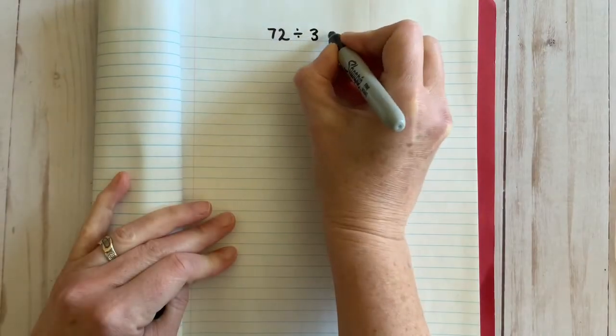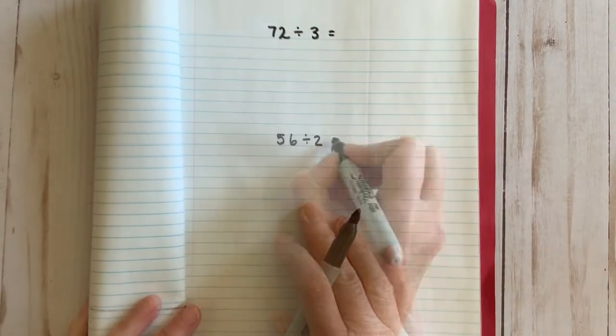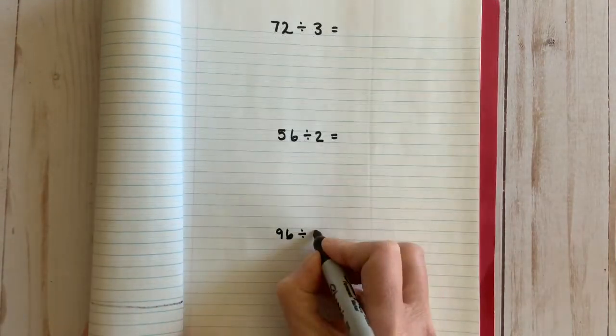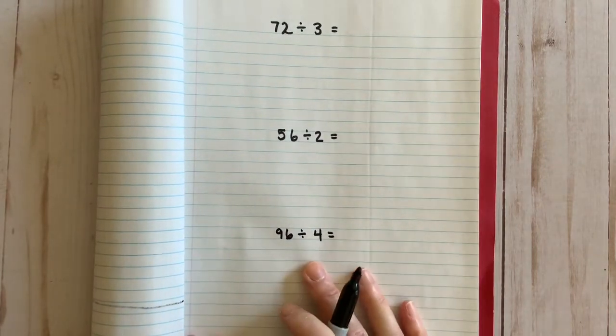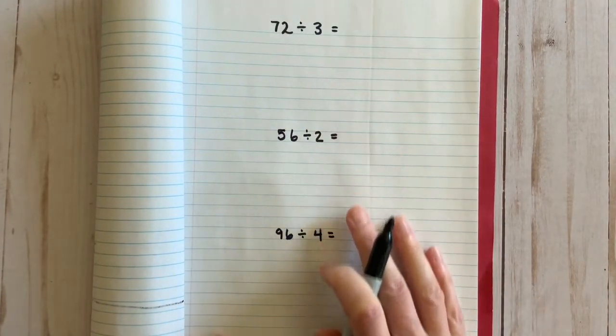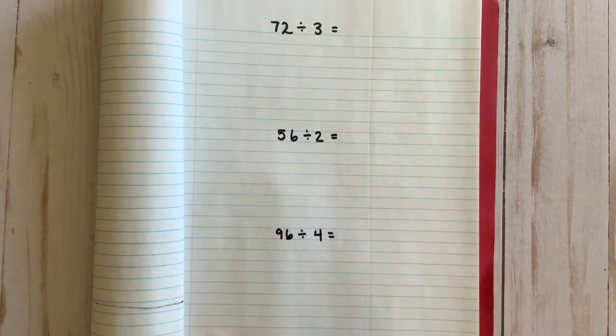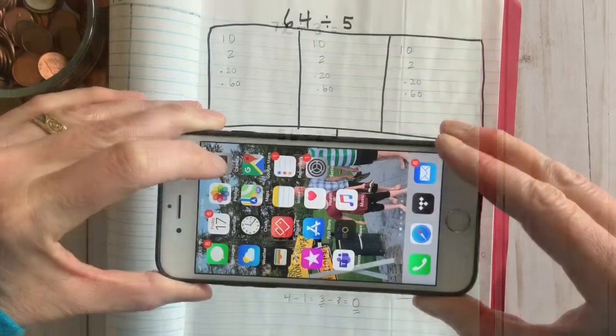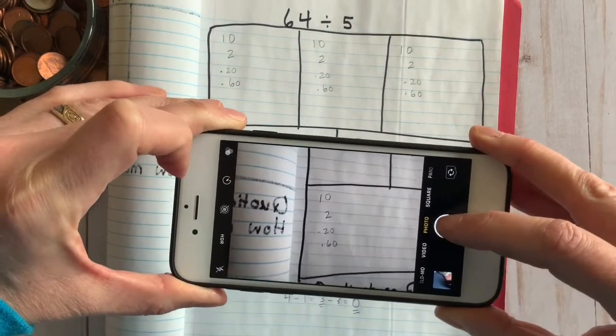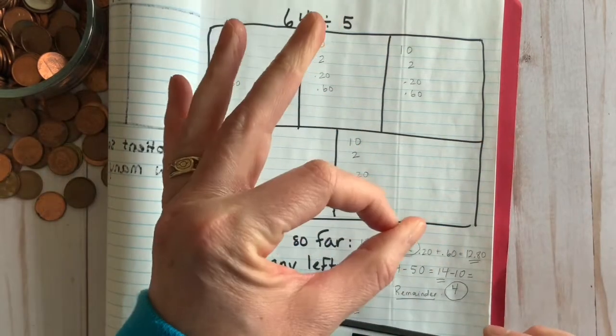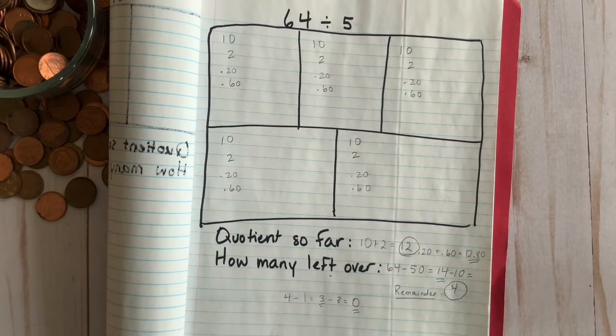So now it's your turn. Divide evenly and fairly using the steps you just learned. Don't forget to keep track of the quotient so far and how much of the dividend you have left to divide. Finally, make sure you snap a quick picture to share with your teacher. Good luck everyone.